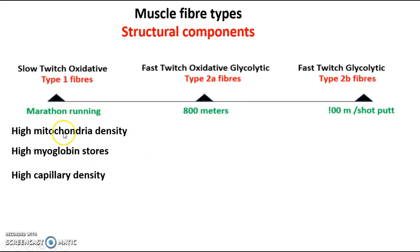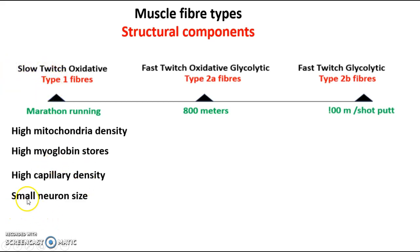Those three structural features — high mitochondria, high myoglobin, high capillary density — are all oxygen-based and aerobic, and they are within the muscle cell to allow slow twitch oxidative fibre to perform aerobic activities such as marathon running. Because we are working at low intensity, the fibre size is small and the neuron size is also small, as it only needs to produce low intensity movements.